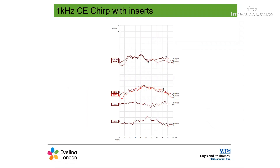Here are responses for 1 kHz on the right side. Results indicate some robust ABR responses at high stimulus levels in the presence of OAEs. These results follow the pattern of results consistent with ANSD, and therefore we decided to follow the BSA ANSD procedure and review at 8 to 10 weeks corrected age.